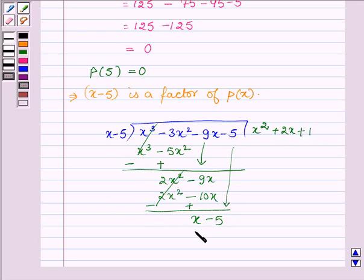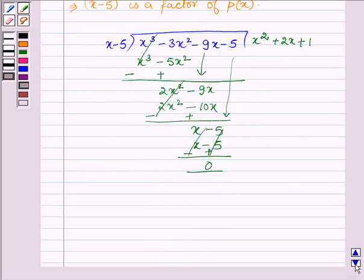Multiplying x minus 5 with 1 we get x minus 5, and on changing the signs we get the remainder as 0.